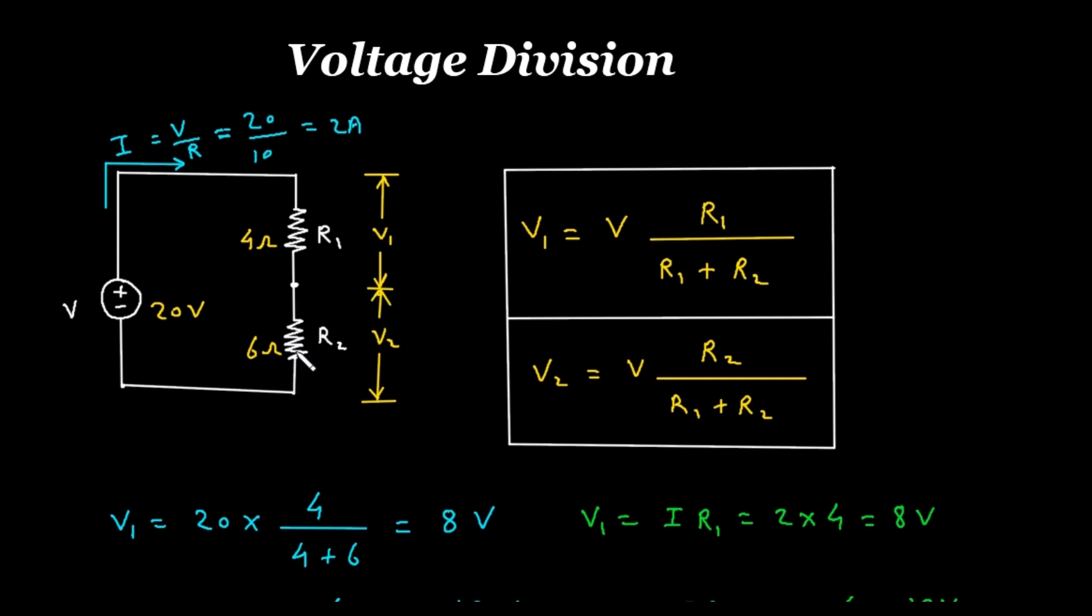We have to take all the resistances which are connected with it. So here, only R2 is connected, so that's why R2. So again, to find V1, the formula is V into R1 upon R1 plus R2.